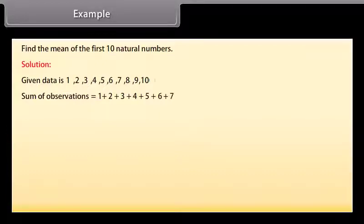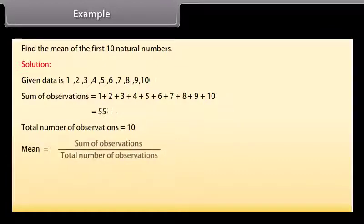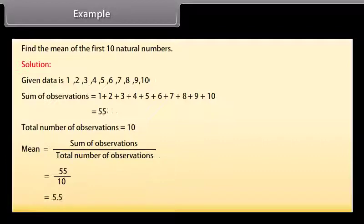Example: Find the mean of the first 10 natural numbers. Solution: The given data is 1, 2, 3, 4, 5, 6, 7, 8, 9, 10. Sum of observations equals 1+2+3+4+5+6+7+8+9+10 equals 55. Total number of observations equals 10. Mean equals sum of observations divided by total number of observations equals 55 by 10 equals 5.5.